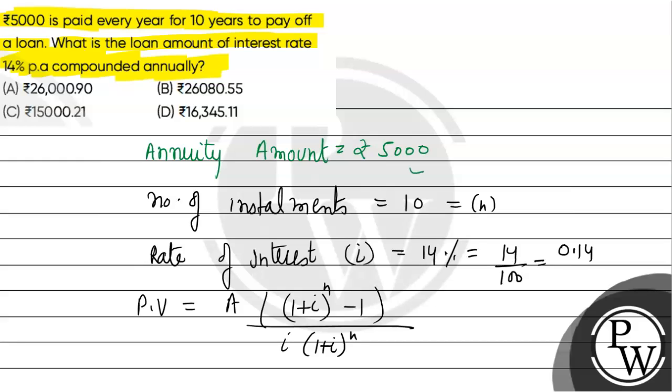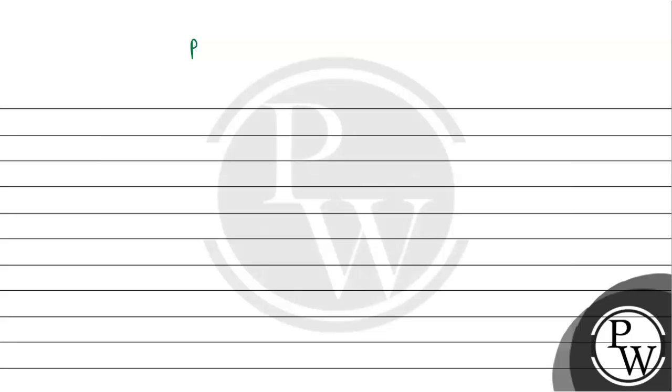Now all values are available, so we will substitute them. Present value of annuity will be annuity amount which is 5000, then 1.14 raised to the power n which is 10 minus 1, divided by 0.14 times 1.14 raised to the power 10. We will further simplify this.